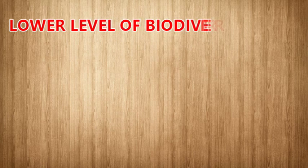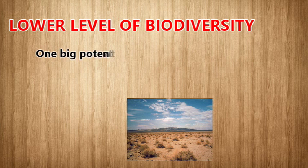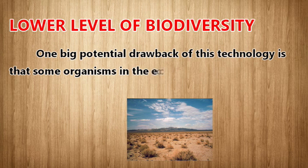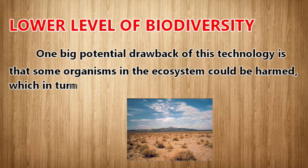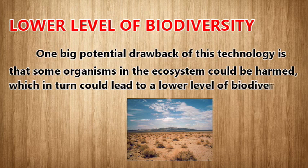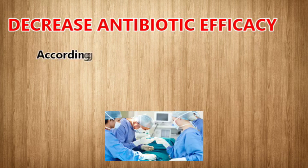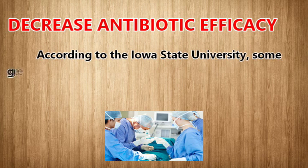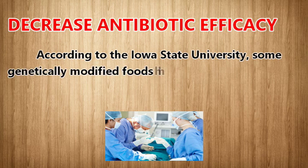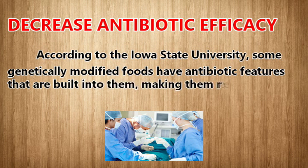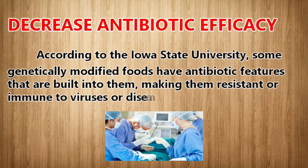Lower level of biodiversity: one big potential drawback of this technology is that some organisms in the ecosystem could be harmed, which in turn could lead to a lower level of biodiversity. Decreased antibiotic efficacy: according to Louisiana State University, some genetically modified foods have antibiotic features built into them, making them resistant or immune to viruses or disease.